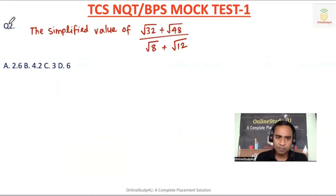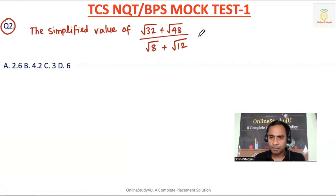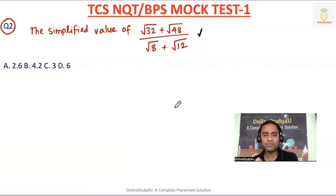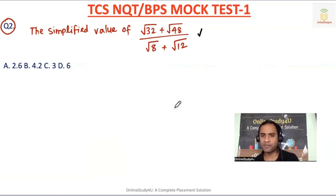Now question number two: the simplified value of √32 plus √48, divided by √8 plus √12. Friends, as soon as you see the question, don't decide you can't do it. At least try, and it's better if you solve these kinds of questions before you go for the actual examination.